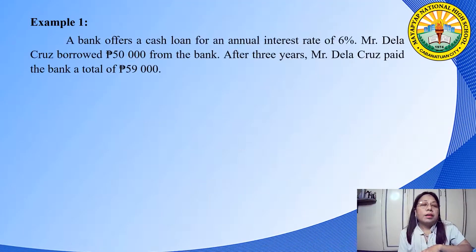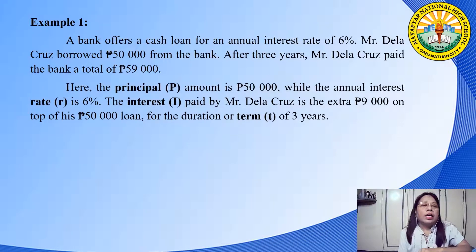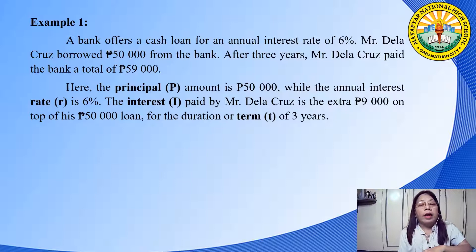For example, a bank offers a cash loan at an annual interest rate of 6%. Mr. Dela Cruz borrowed 50,000 pesos from the bank. After three years, Mr. Dela Cruz paid the bank a total of 59,000 pesos. Here, the principal (symbol P) is 50,000 pesos, the annual interest rate (R) is 6%, and the interest (symbol I) paid by Mr. Dela Cruz is the extra 9,000 pesos on top of his 50,000 pesos loan for a term of three years.